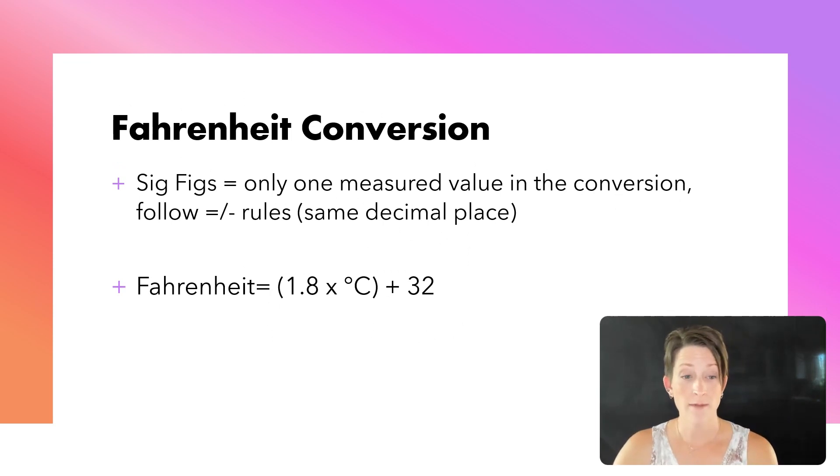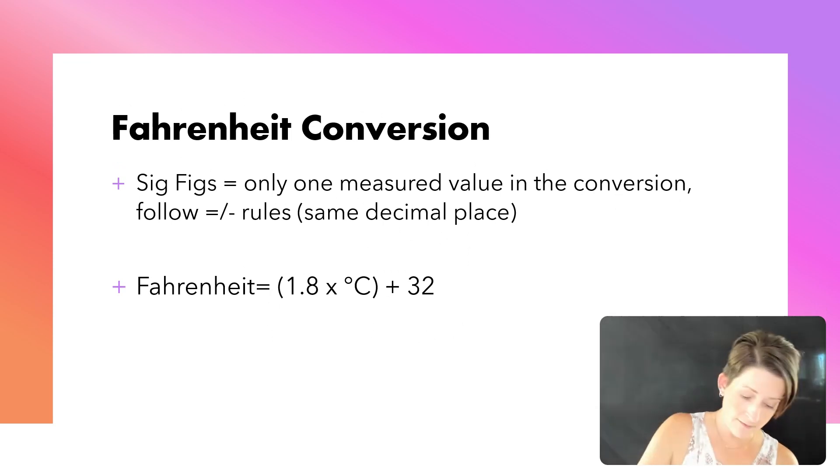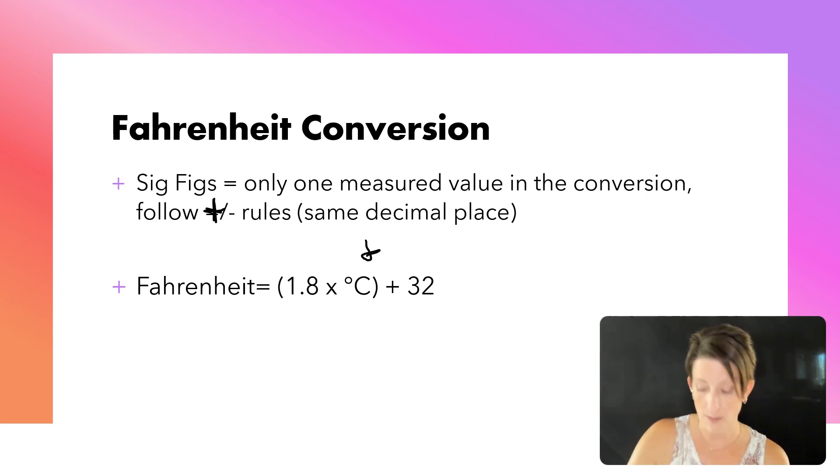So now going to Fahrenheit, same sig fig rules. We're going to go to the measured value for the temperature in which we have recorded. I want to show you how to rearrange one of these equations. So let's say I remember Celsius, because that's the one we typically go to first. Celsius is degrees Fahrenheit minus 32 over 1.8. I can rearrange this equation to solve for Fahrenheit.